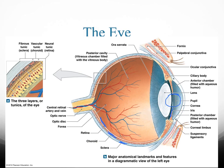The light goes in through another structure called the pupil. The iris is the muscle that controls the amount of light that goes in. The lighter the environment, the smaller the pupil will be, and the darker the environment, the larger the pupil.